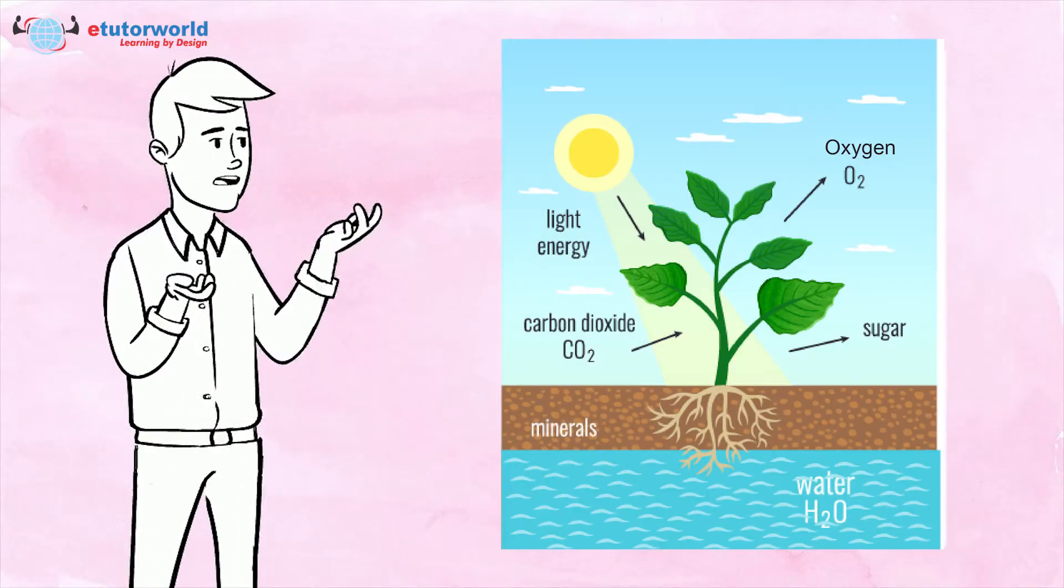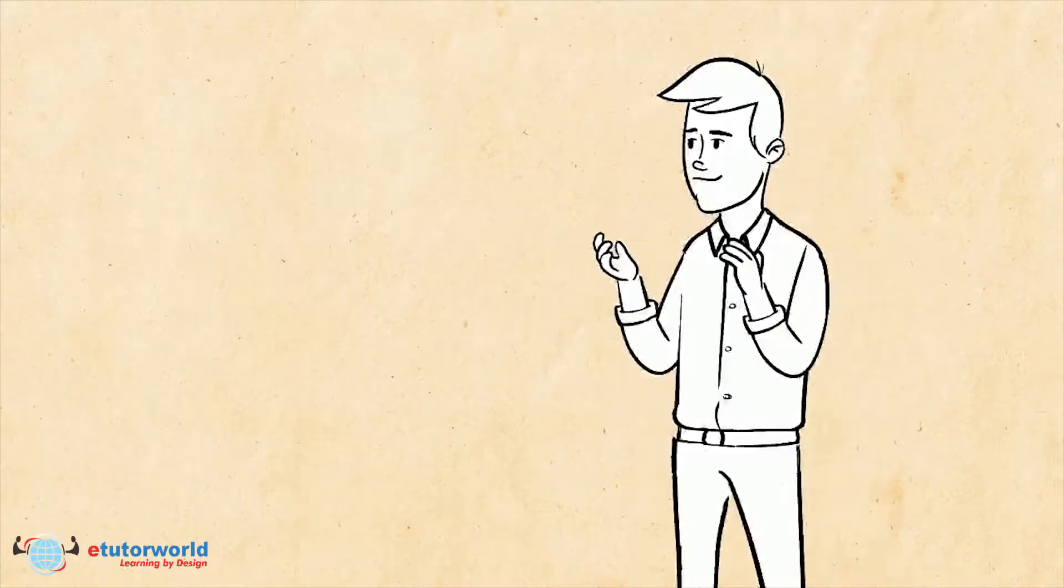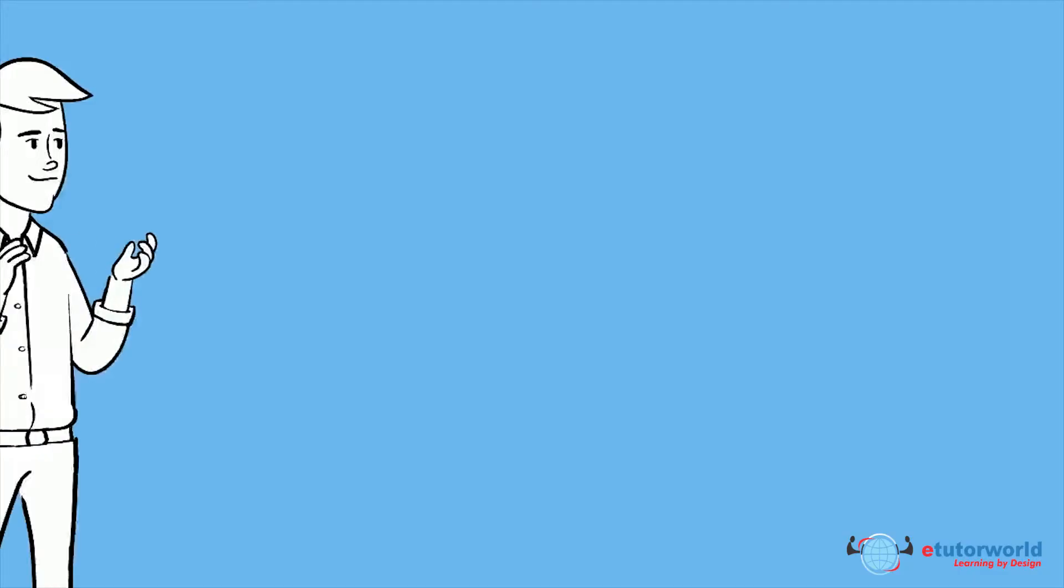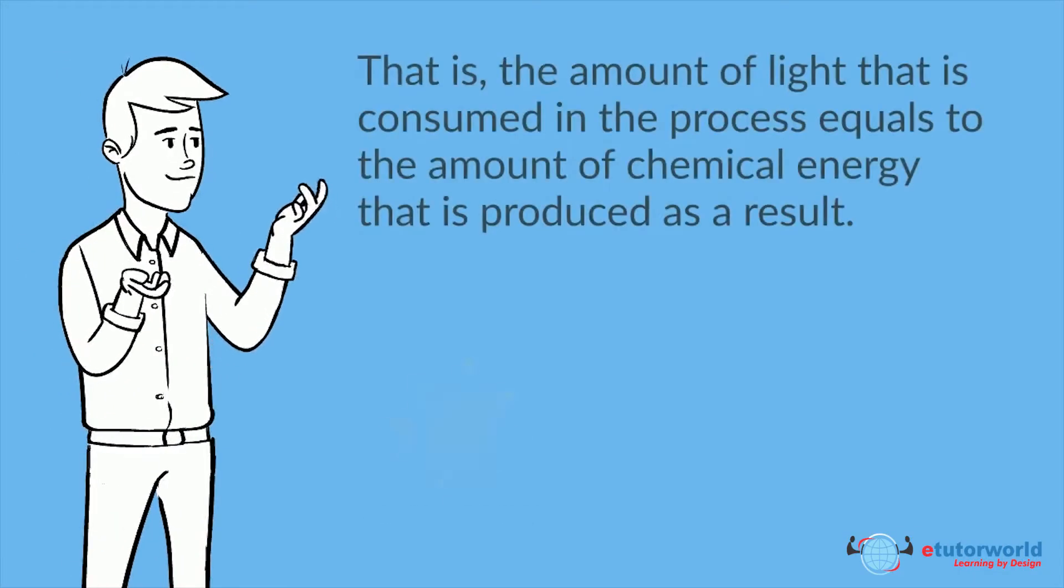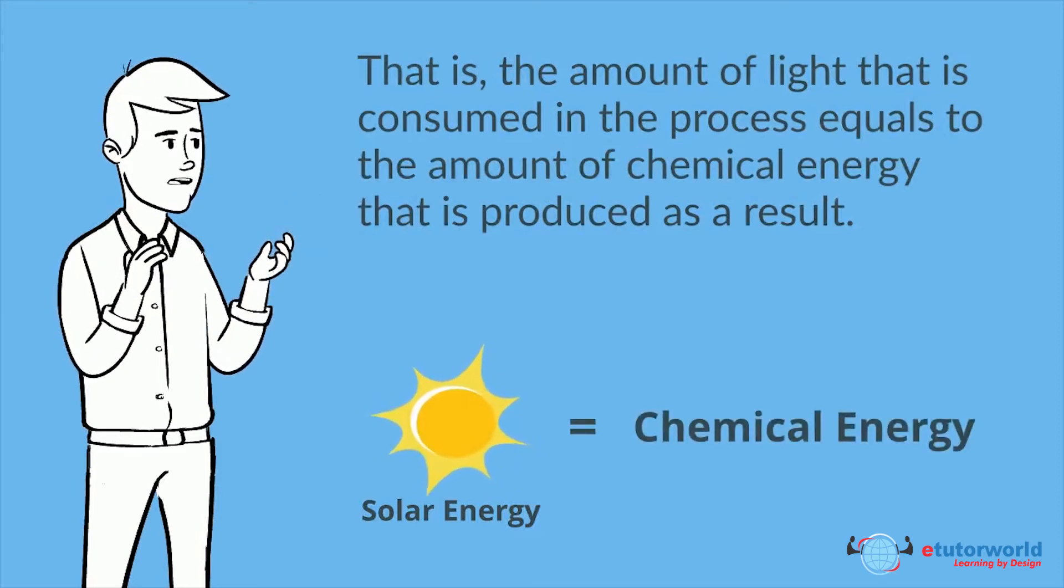In photosynthesis, plants convert light energy to chemical energy and store it in the form of sugar. The law of conservation of energy is followed in the process. That is, the amount of light consumed equals the amount of chemical energy produced.